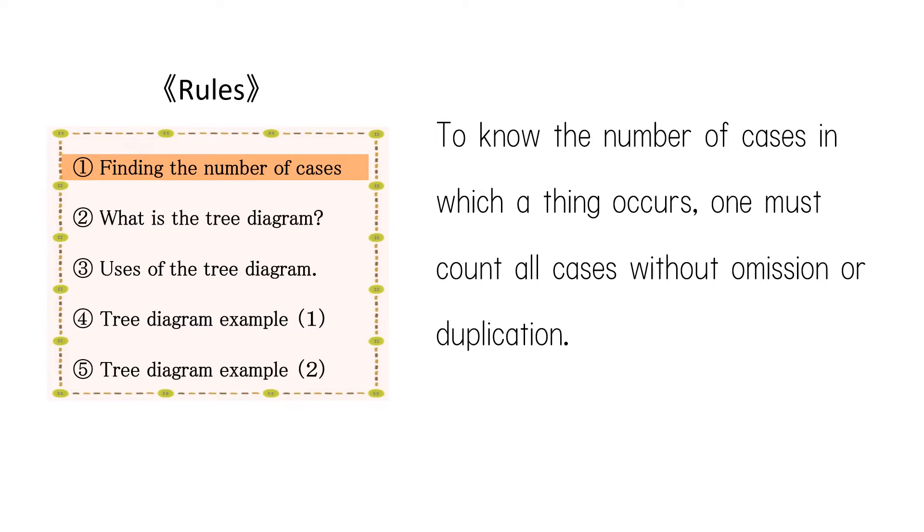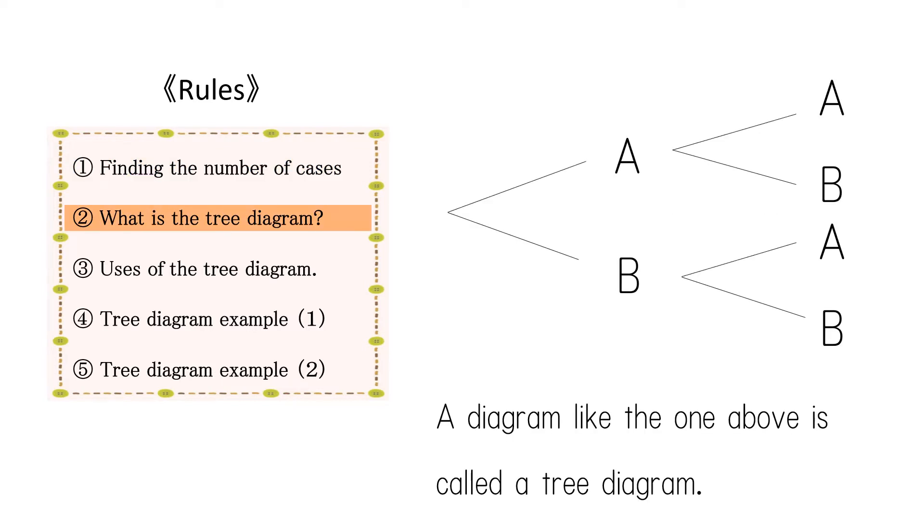To know the number of cases in which a thing occurs, one must count all cases without omission or duplication. To do that, we use a tree diagram.